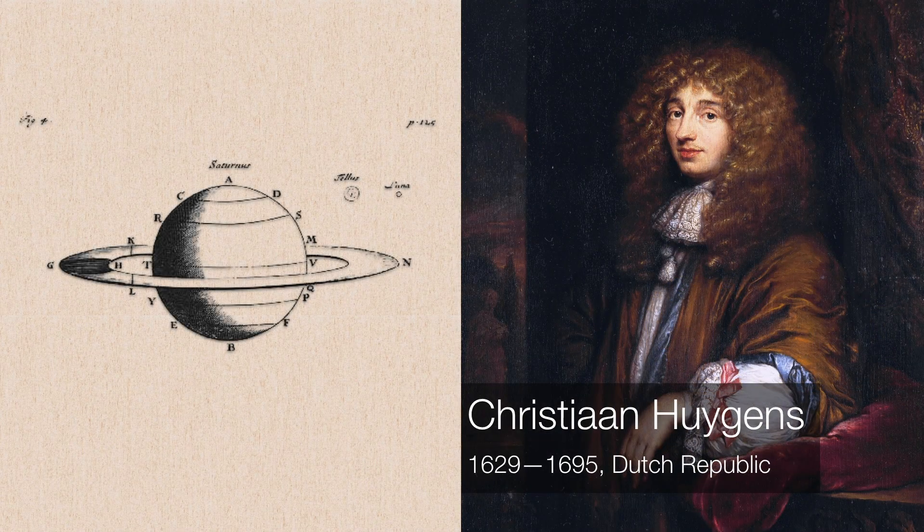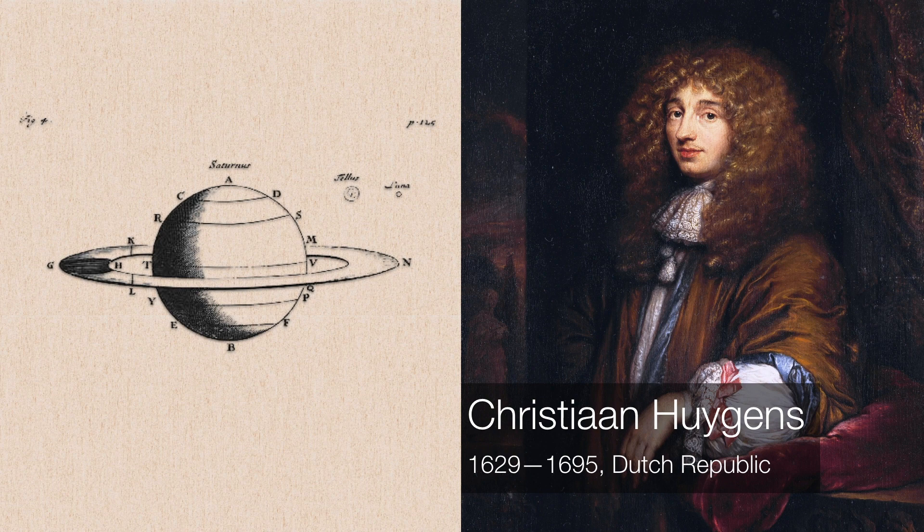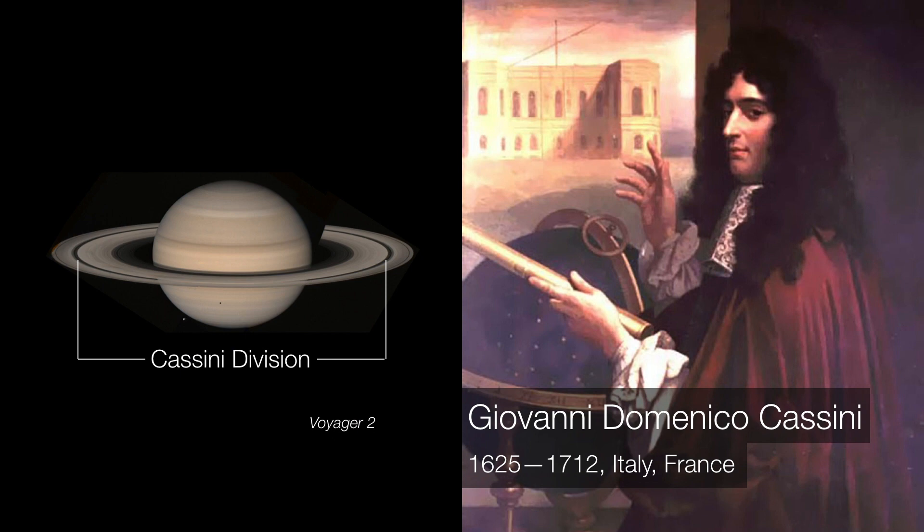In 1655, Christian Huygens in the Dutch Republic suggested that perhaps Saturn was encircled by a thin, flat ring. In 1675, Giovanni Domenico Cassini noticed dark lanes in Saturn's ring and he proposed that the ring may be split into two, or perhaps as many as three, individual rings.